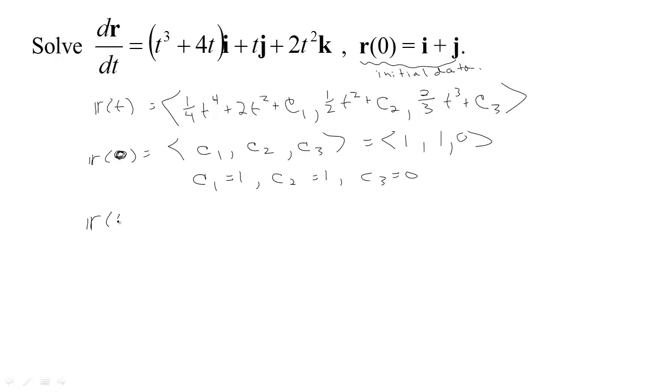So now we've found the actual position function. We don't have the constants anymore because we can replace them with their values. We have 1 quarter t to the fourth plus 2t squared plus 1, 1 half t squared plus c2, and 2 thirds t cubed. So we've started with our velocity and some initial data, and from that we're able to recover our position function.